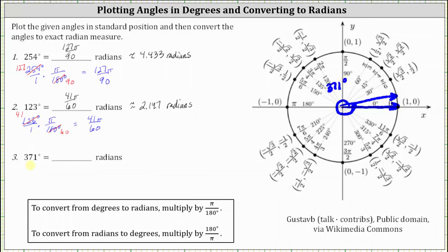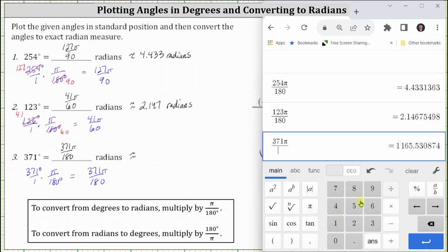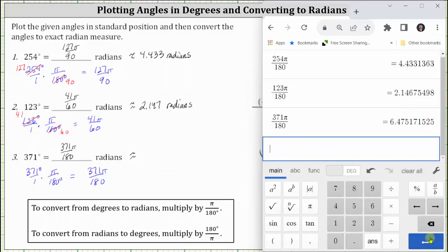To convert to radians, we multiply by pi divided by 180 degrees. In this case, the only common factor between 371 and 180 is 1, indicating nothing simplifies when multiplying, though the units of degrees do simplify out. The exact measure in radians is 371π divided by 180 radians. There's nothing to check on the calculator, but the decimal approximation is found by entering 371π divided by 180, which gives approximately 6.475 radians.